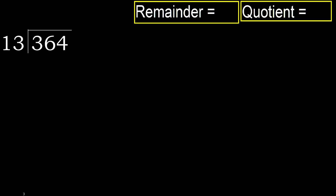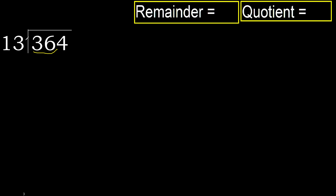364 divided by 13. 3 is less, therefore next. 36 is not less, therefore with 36, 13 multiplied by which number is nearest to 36.